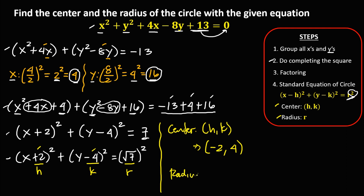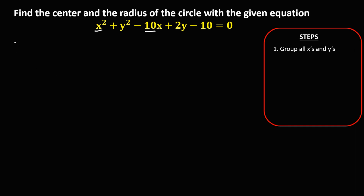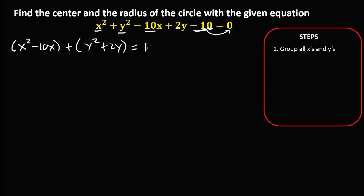Then for the radius, r squared equals 7, so the radius is square root of 7. For the second problem, we need to group all x's and all y's. So we have x squared minus 10x, plus y squared plus 2y, then equals — transpose this constant to the right side, so negative 10 becomes positive 10.